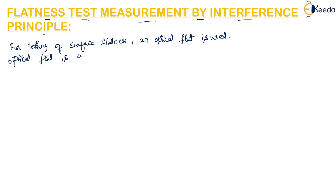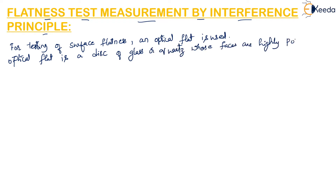Optical flat is a disk of glass or quartz whose faces are highly polished. When we put it into close contact with a nearly flat surface, we can observe bands — dark bands are seen which form a contour map on the surface, exactly similar to the contour on a map of the land. When we put it in contact with a surface whose flatness has to be tested, bands are formed.